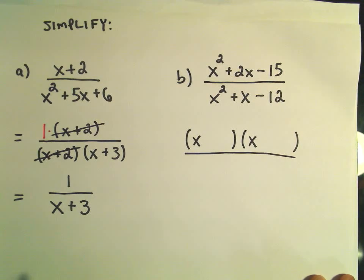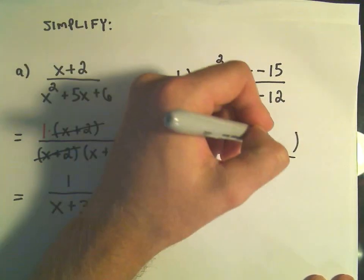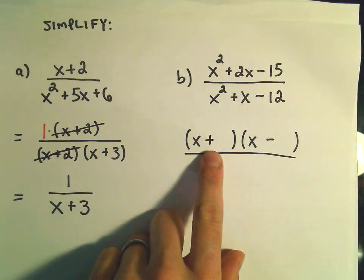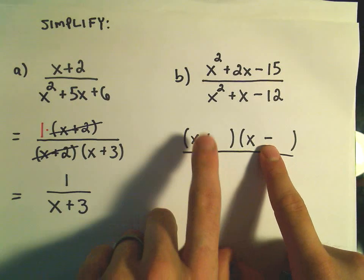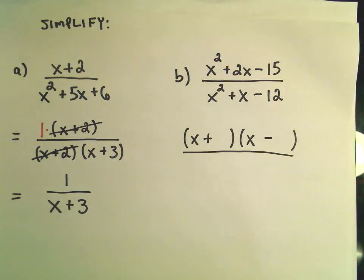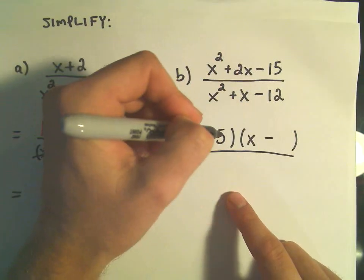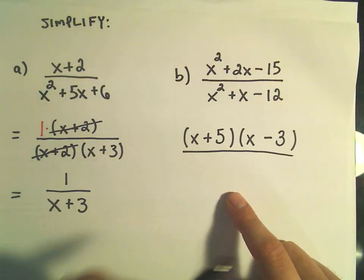I'm thinking two numbers that multiply to negative 15 but add up to positive 2. So to get a negative I'm going to have to have a positive and a negative. And I think 3 and 5 will work. Since the middle term is positive, the bigger of 3 and 5 will have to be the positive, which means we'll need positive 5 and then we'll need negative 3.